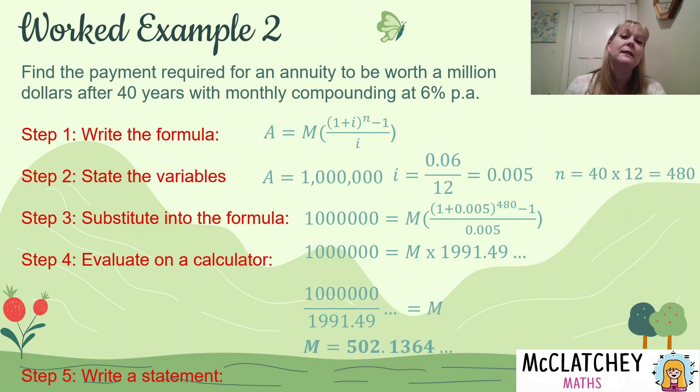And then my value for M becomes 502.1364, lots of decimal places. Needs to be rounded to two decimal places. Good to write a statement and make sure we give that to $502.14. So correctly rounded with that dollar sign as well. Now, you'll notice that in this formula, there's also a value for N and a value for i. We've worked out a question for a worked example, finding A and finding M.